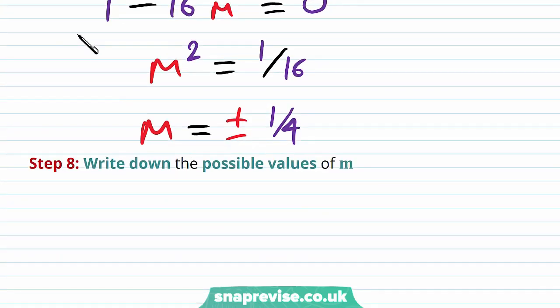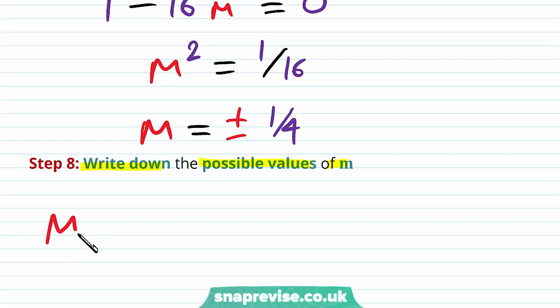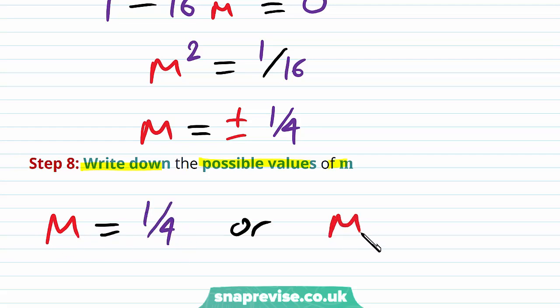Our last step is to write down the possible values of m. In order to have equal roots, we can have m equals 1 quarter or m equals minus 1 quarter.